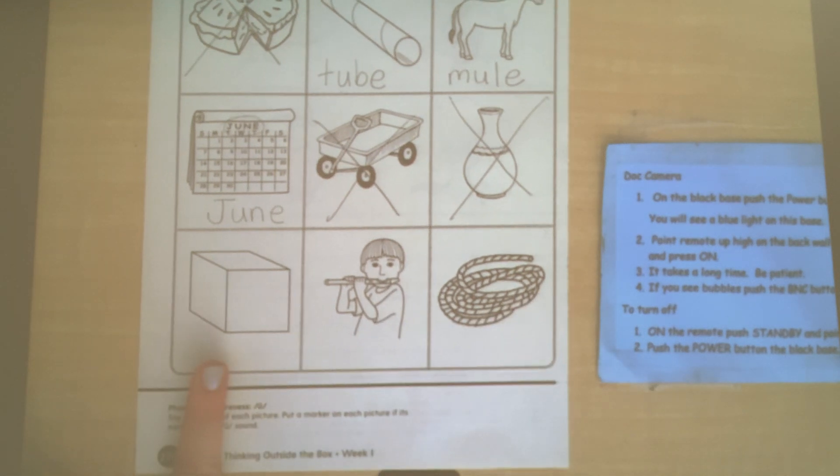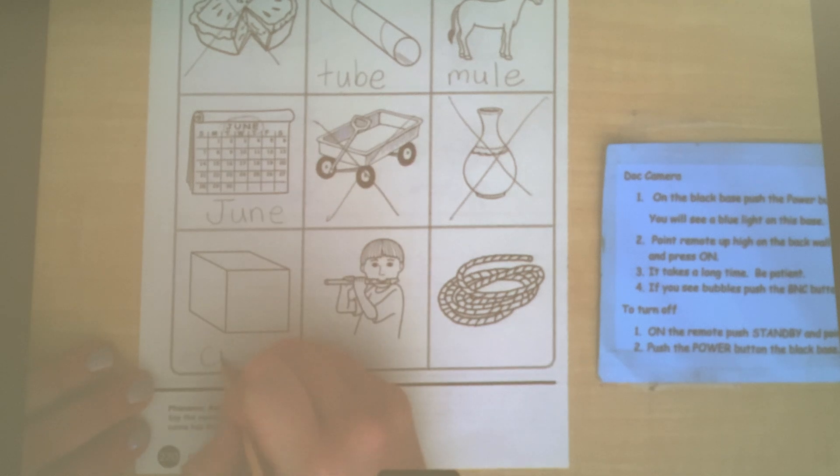What shape is this? It looks like a box or an ice cube. Ding, ding, ding. Cube. C-U-B.